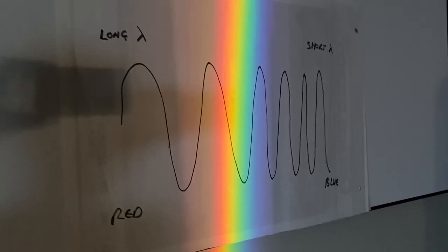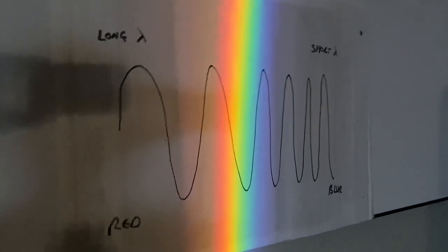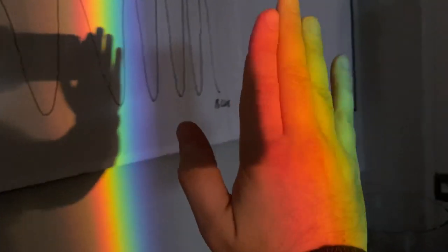I've written that on the board just so students can see the long wavelength is red and the short wavelength is blue. I can put my hand in the beam and do anything else I want in the beam, and it's a really nice demonstration of the colors of the rainbow.